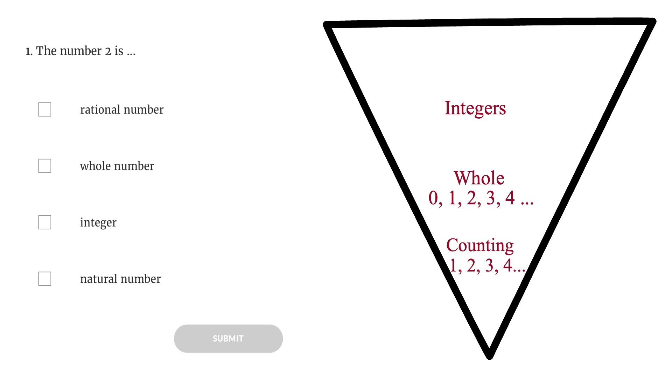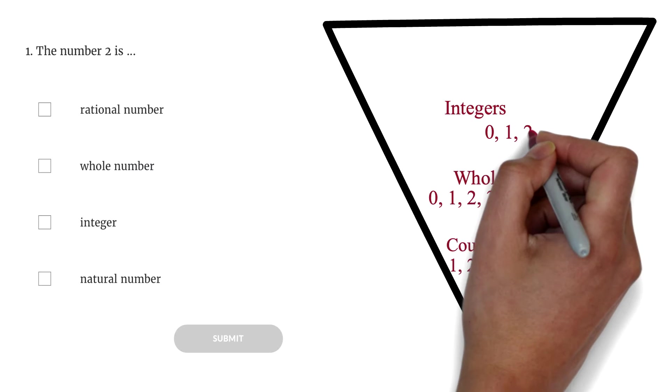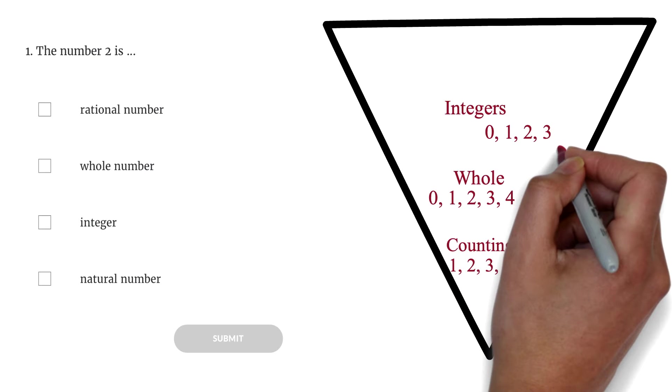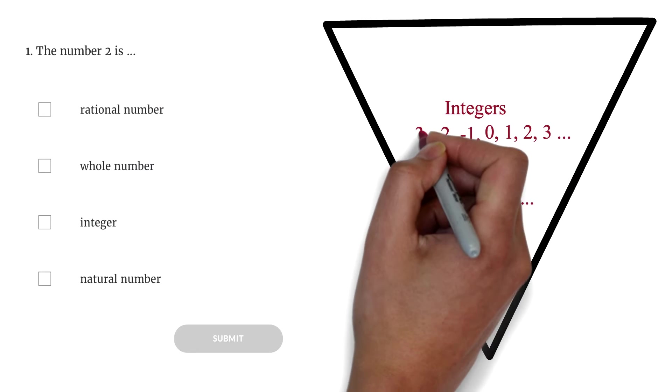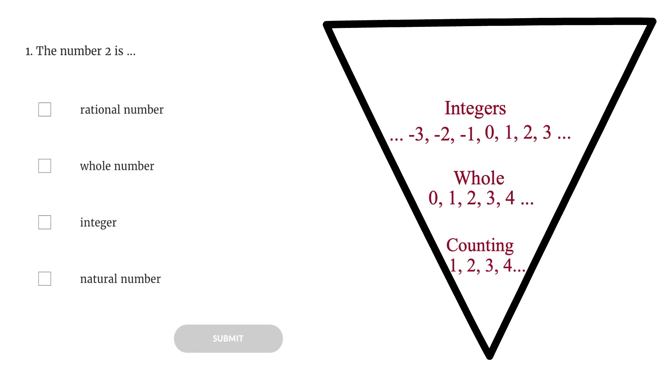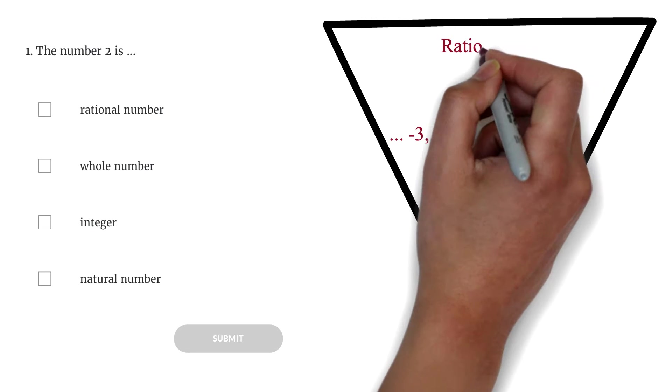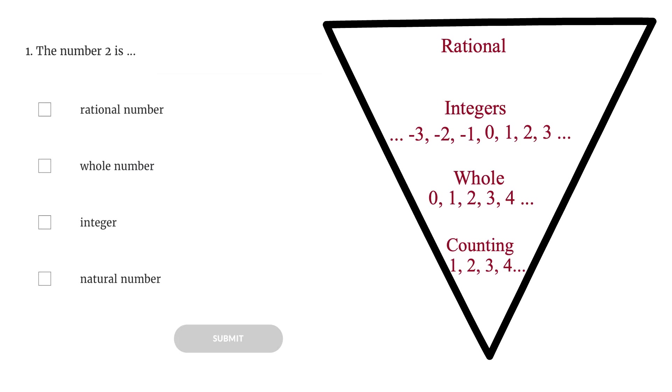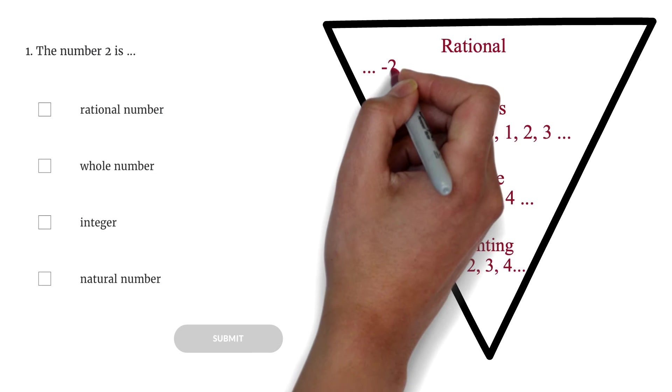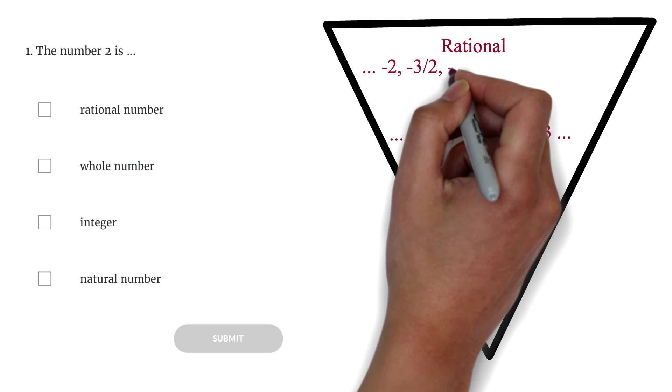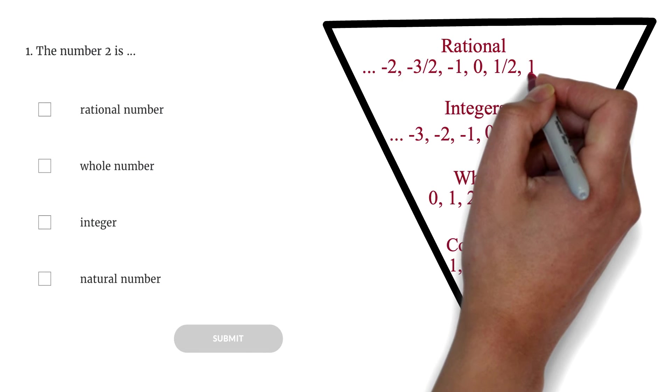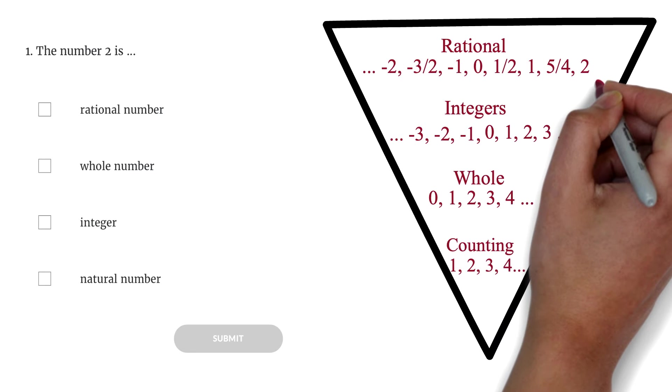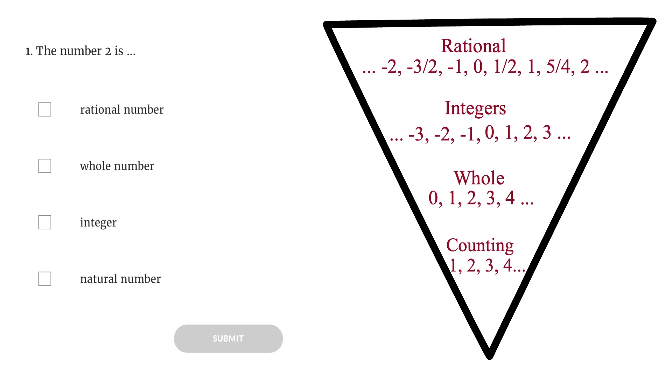When we add negatives, we have integers. We have 0, 1, 2, 3, and so on, and we can add negative 1, negative 2, negative 3, and so on to get our integers. When you add fractions to integers, then you have rational numbers. So we have negative 2, negative 3 over 2, negative 1, 0, 1 over 2, 1, 5 over 4, 2, and so on.